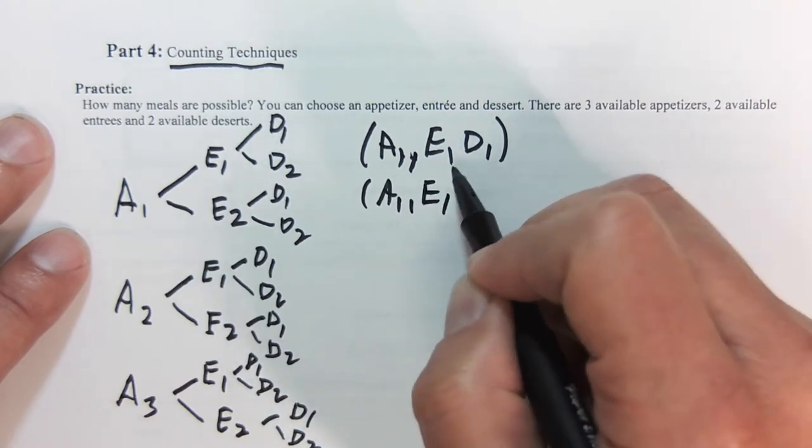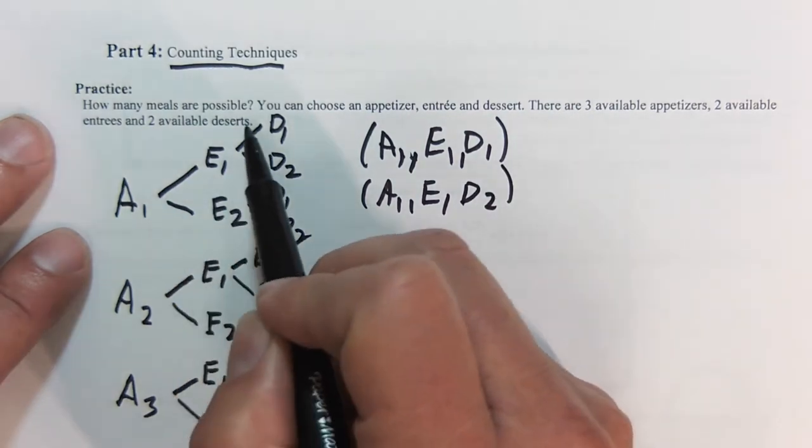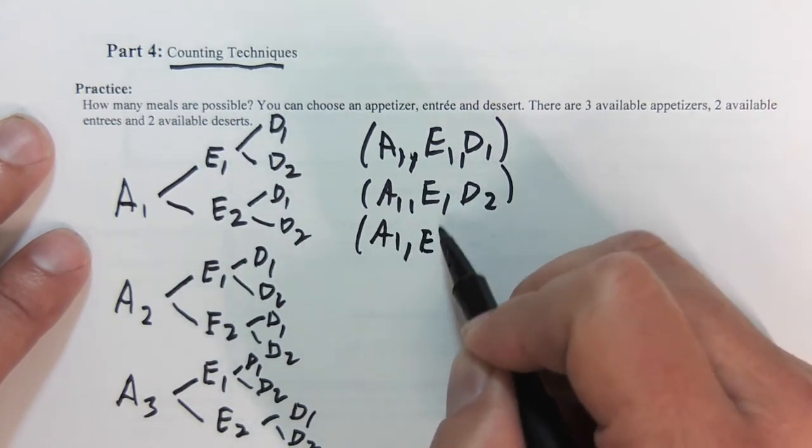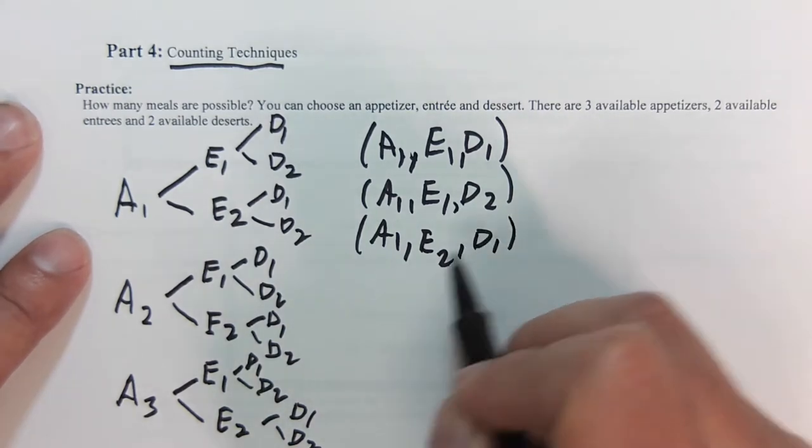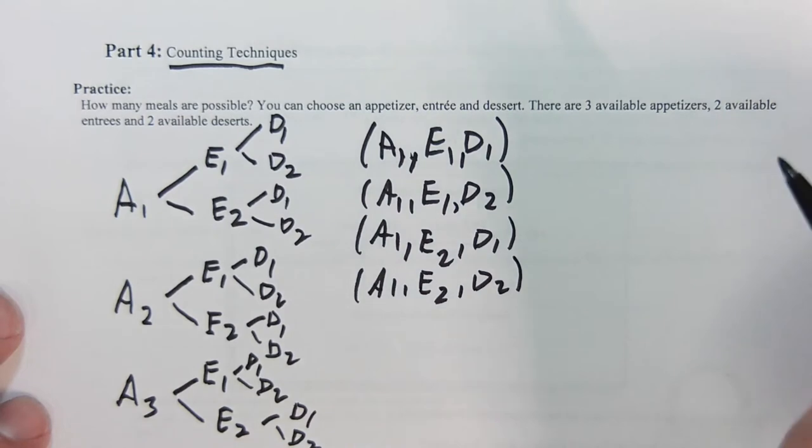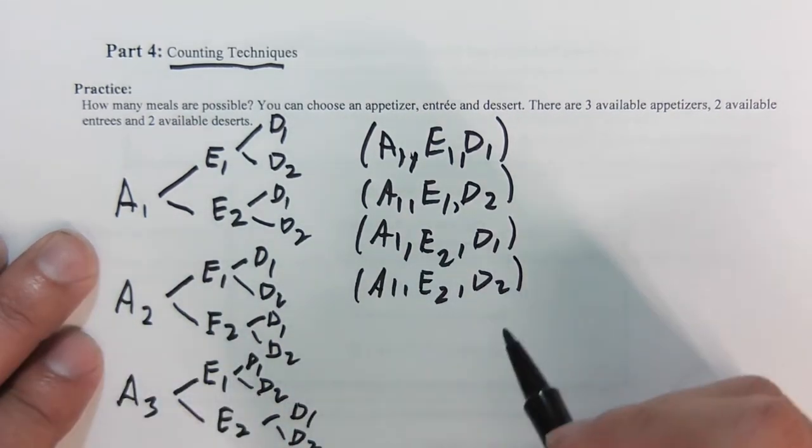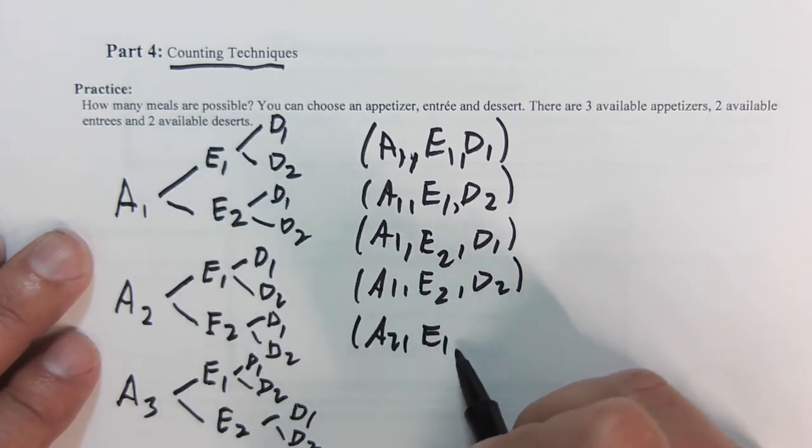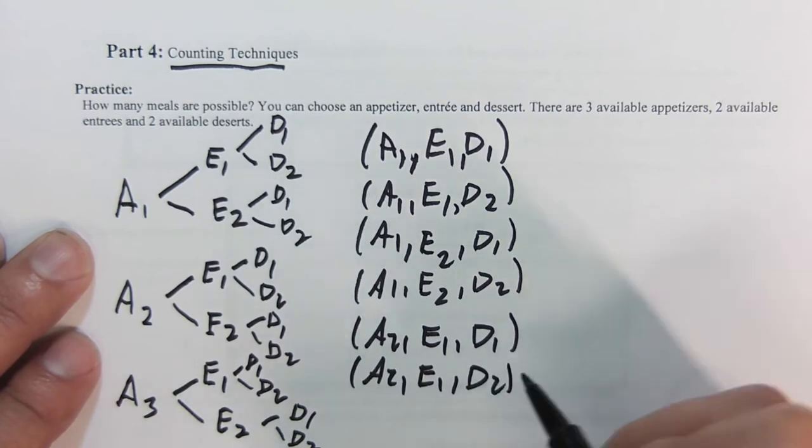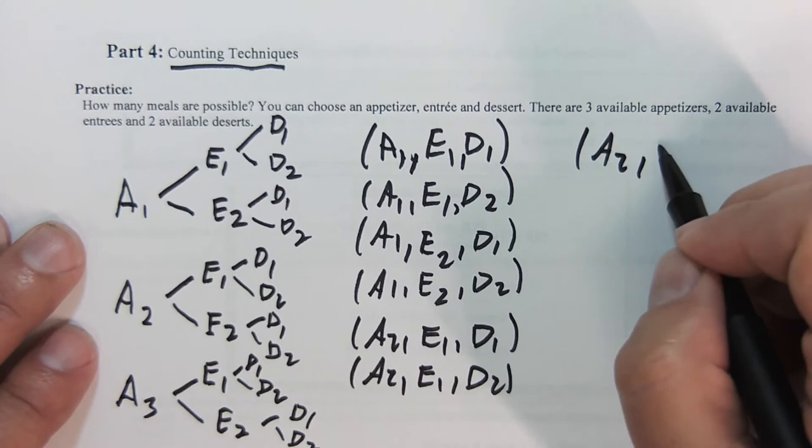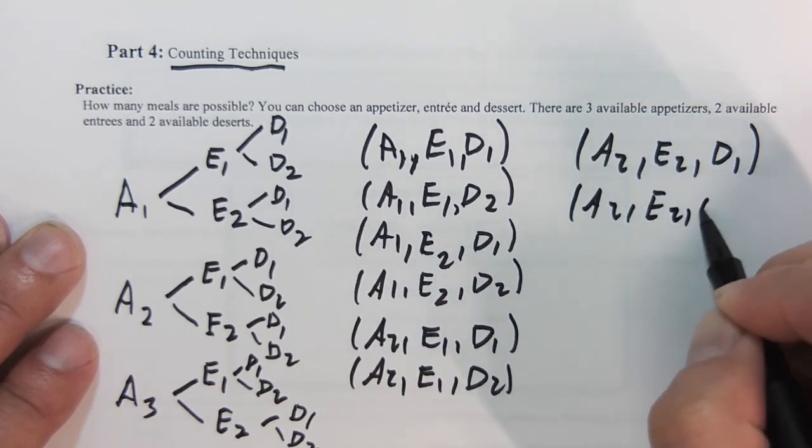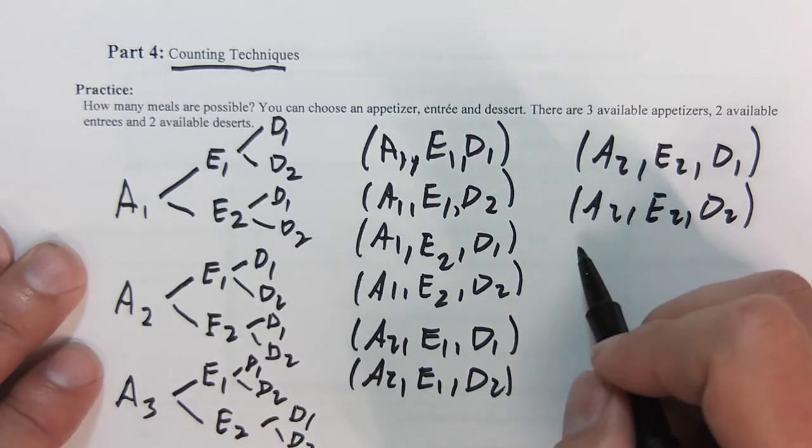Appetizer one, entree one, dessert two. So I'm just going along here. Appetizer one, entree two, dessert one. Appetizer one, entree two, dessert two. So we've done all four of appetizer one. Appetizer two, we have entree one, dessert one.